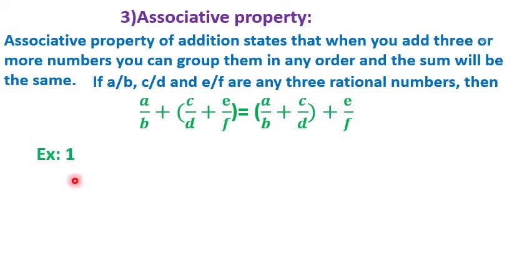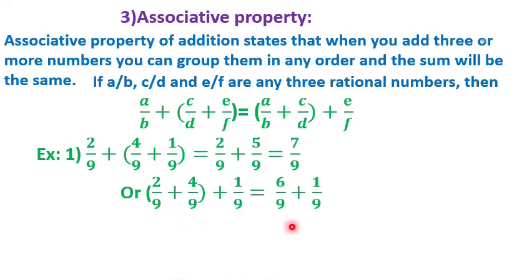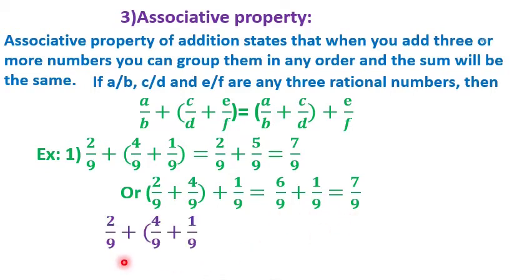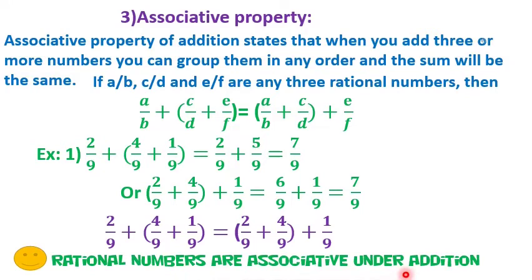For example, 2/9 plus (4/9 plus 1/9) equals 2/9 plus 5/9 equals 7/9. Now changing the grouping: (2/9 plus 4/9) plus 1/9 equals 6/9 plus 1/9 equals 7/9. So even if we change the order of the grouping, we get the same answer: 2/9 plus (4/9 plus 1/9) equals (2/9 plus 4/9) plus 1/9. Addition of rational numbers is associative.